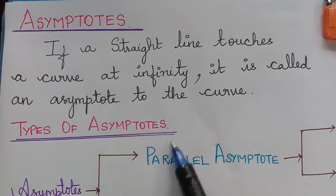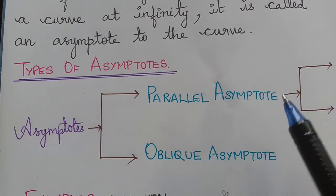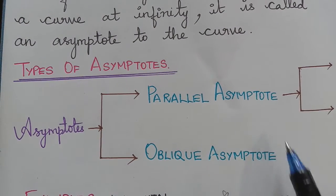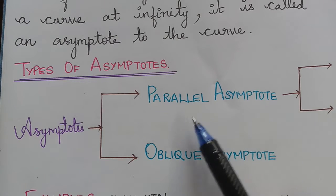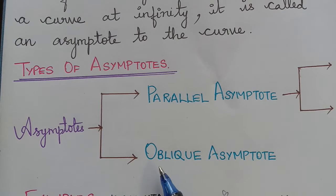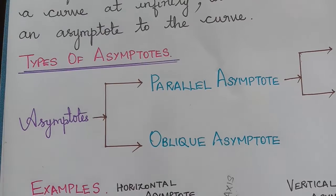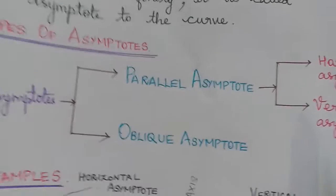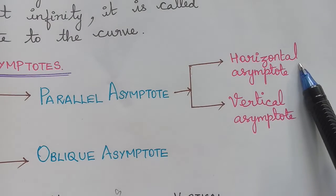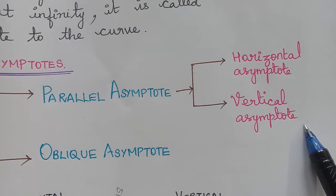There are two types of asymptotes in general: parallel asymptote and oblique asymptote. Under parallel asymptotes, we have horizontal asymptote and vertical asymptote.